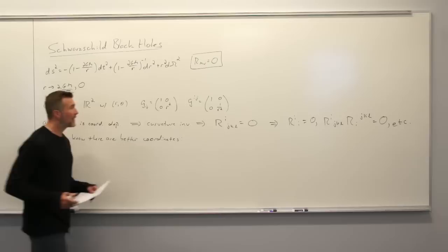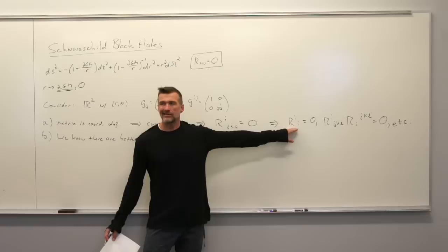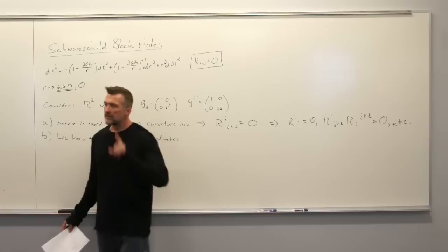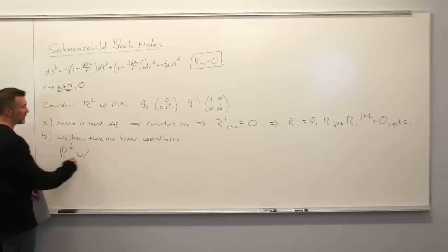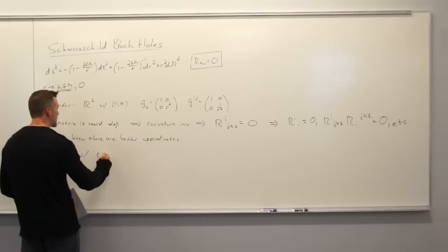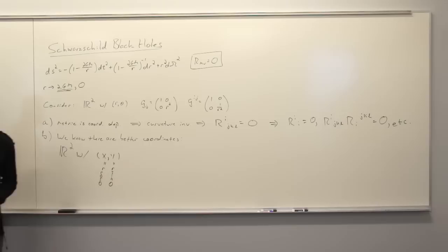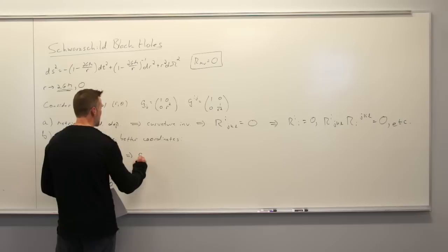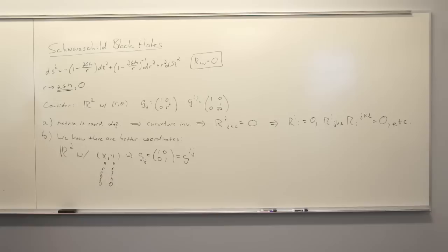We know there are better coordinates. If you identify that in one set of coordinates you're getting wonky behavior at a point, but from our analysis of the curvature we know it's behaving fine there, that should tell us there's probably a set of coordinates where that point is obviously fine. For the two-dimensional plane, those are x and y. Using x equals r cosine theta, y equals r sine theta, the metric becomes the identity matrix, and clearly that matrix isn't going to do anything interesting when x equals zero and y equals zero.